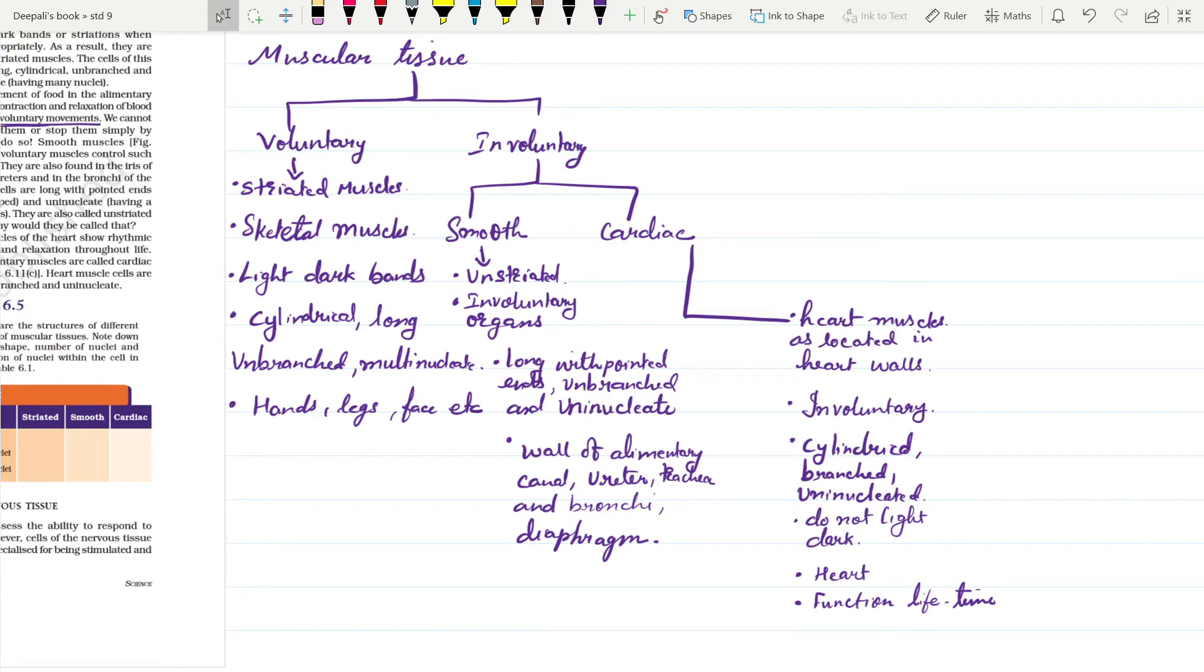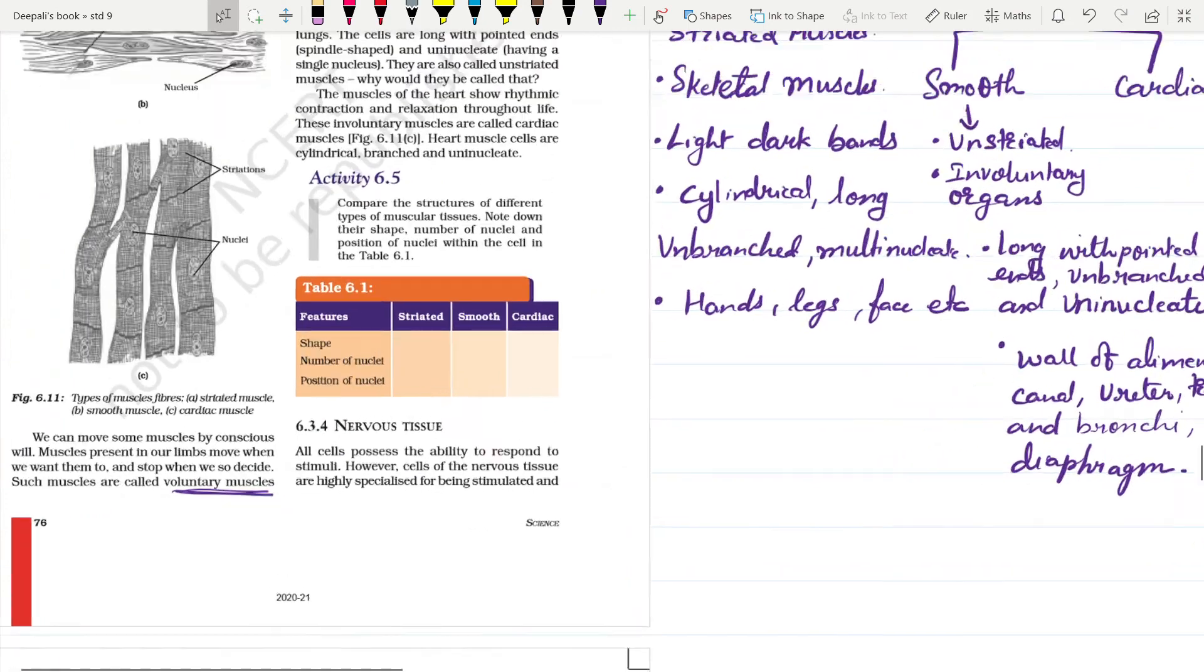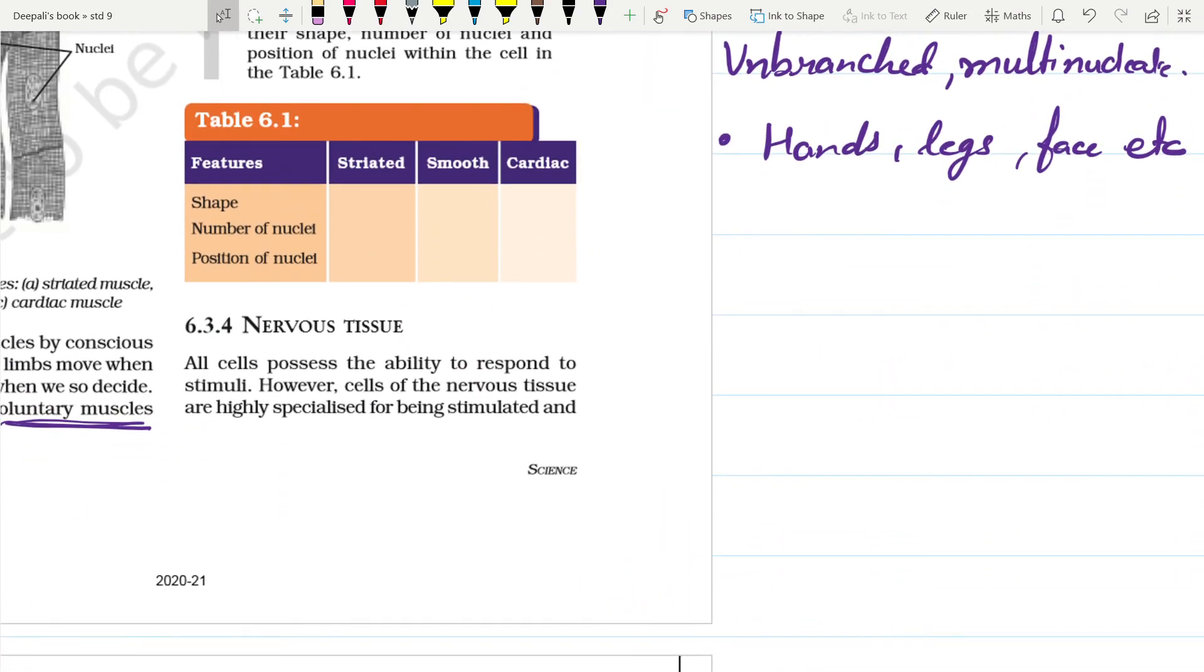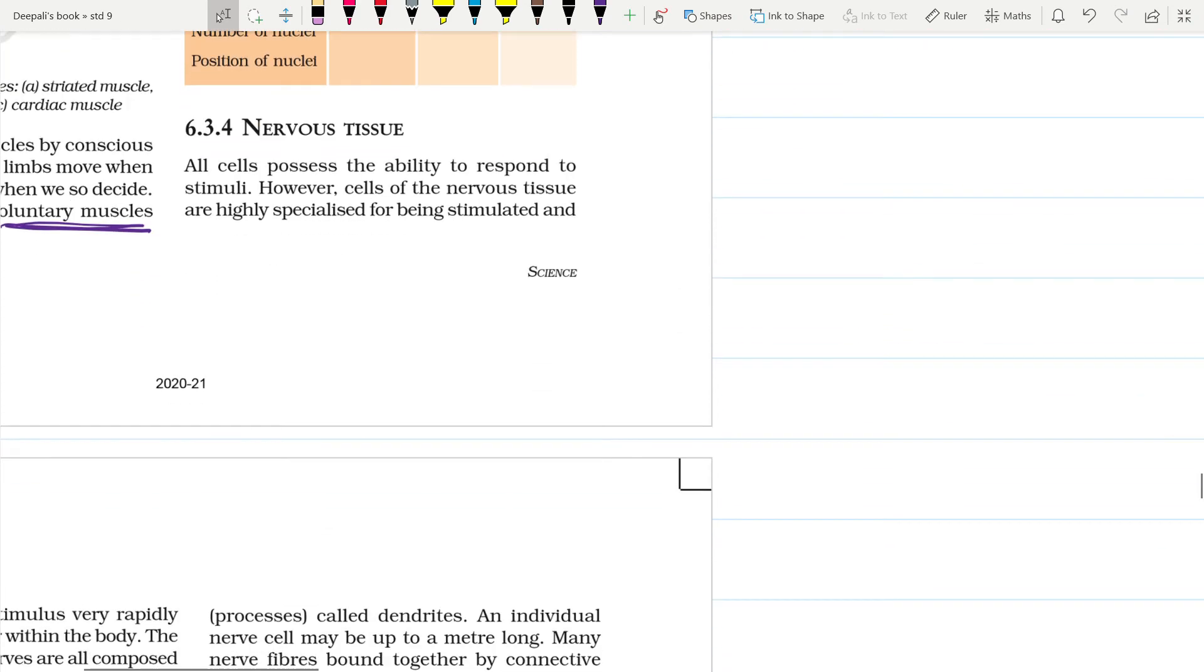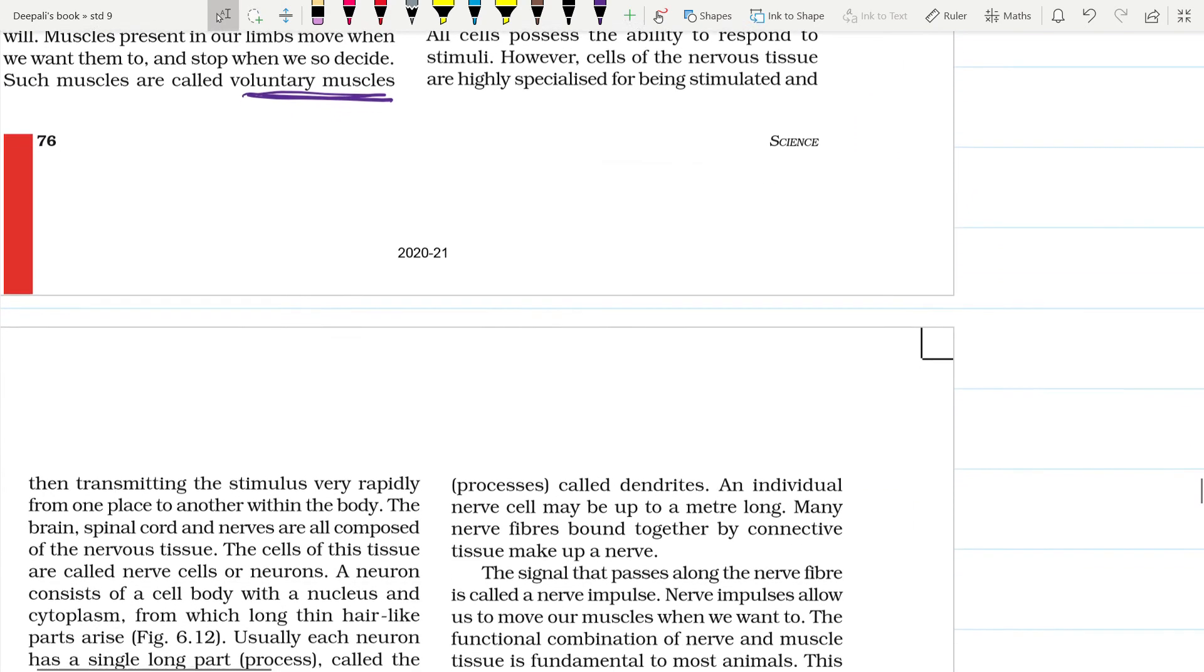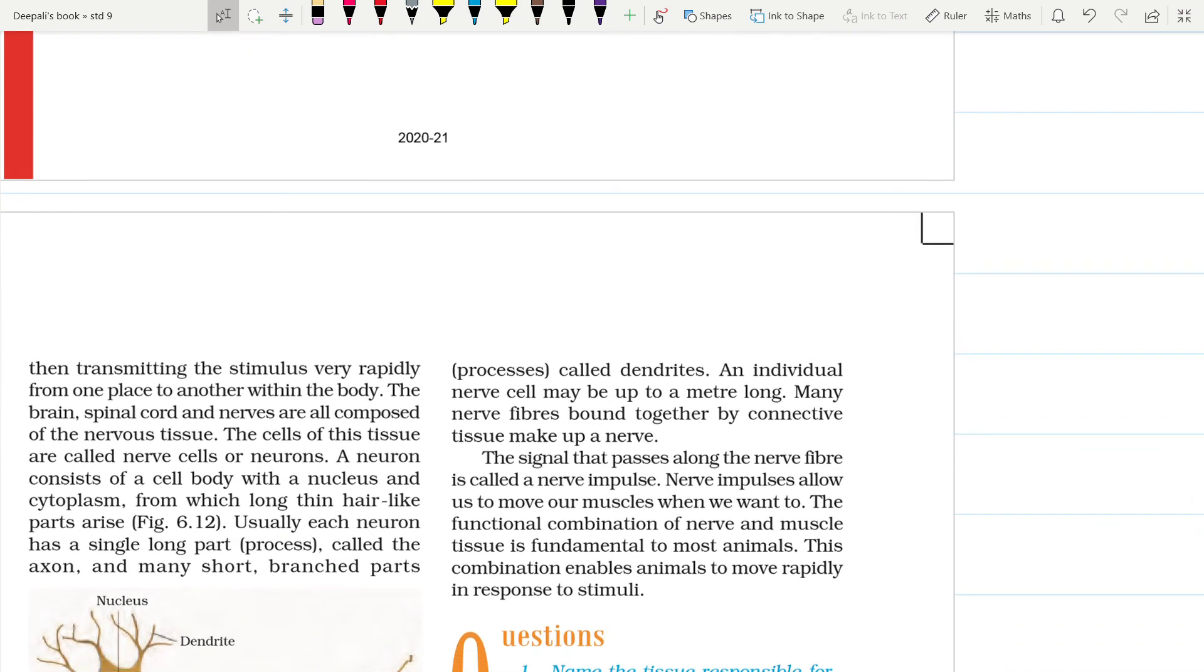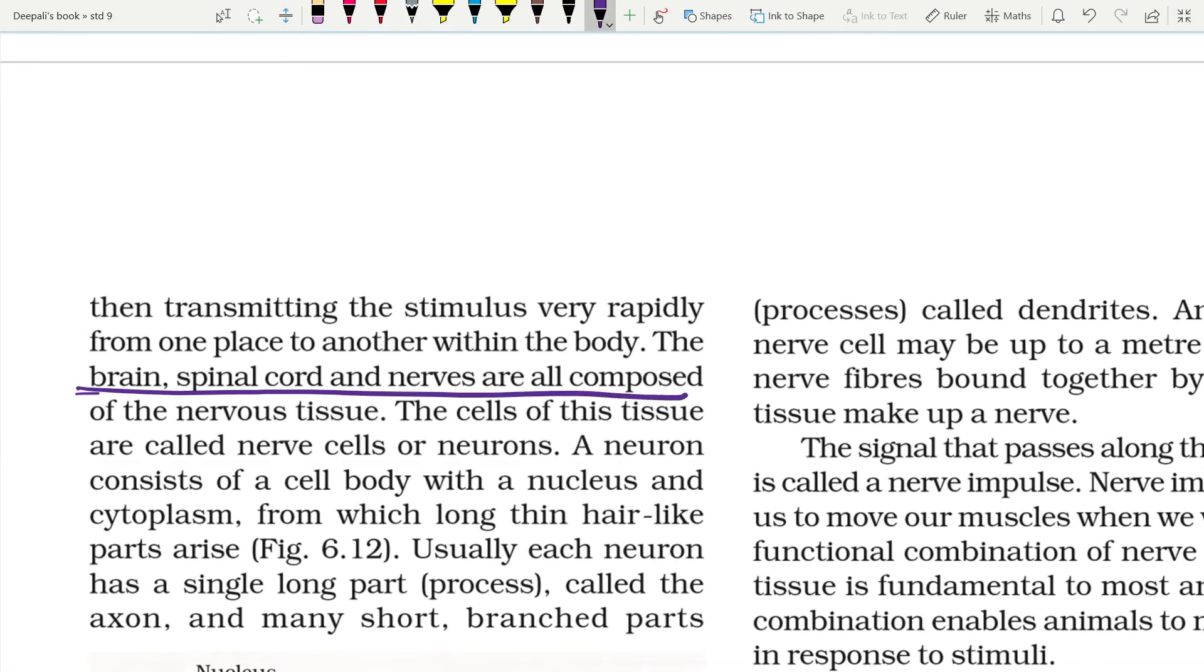Now let us see the last tissue, that is the nervous tissue, which helps in control and coordination of the body. All cells possess the ability to respond to stimuli. However, cells of nervous tissues are highly specialized for being stimulated and then transmit the stimulus very rapidly from one place to another within the body.